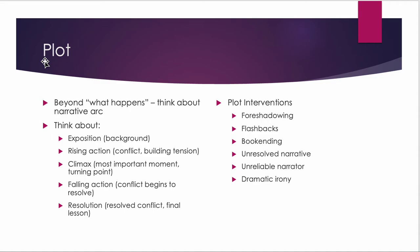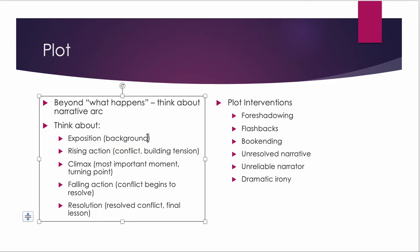When looking at plot, you want to think about it as more than just what happens in a story. Think about what's called the narrative arc. It has five parts and looks basically like a little mountain. The first part is the exposition — this is where you get the background. The narrator starts the story here. Without it, you wouldn't understand what happens in the story or why certain things are happening. It's the background of the characters, the situation, and the historical context.